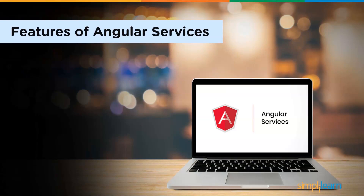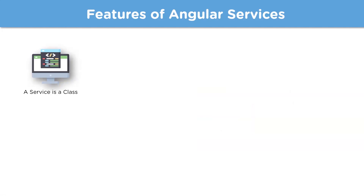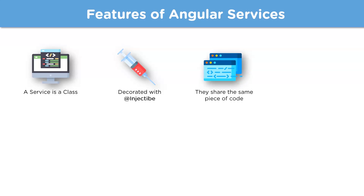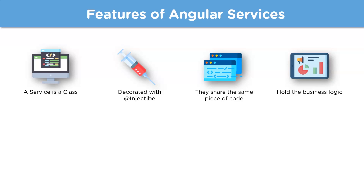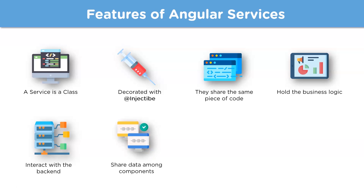An Angular service is typically a TypeScript class with an @Injectable decorator. This decorator tells Angular that the class is a service and can be injected into components that need it. Services can be used to share the same piece of code, and they can also inject other services as dependencies. They hold valuable business logic and can interact with the backend — for example, if you want to make AJAX calls, you can have methods for those calls in the service.